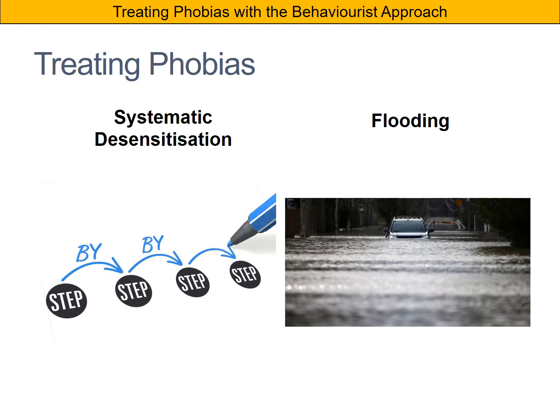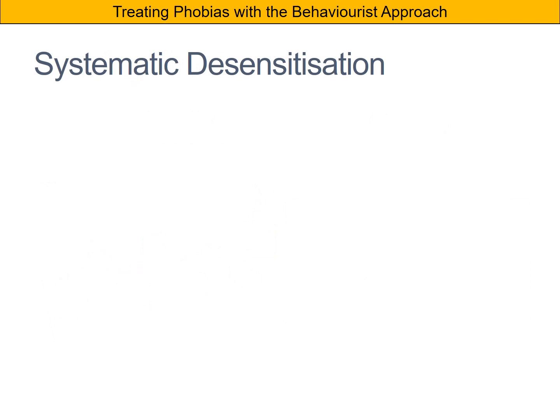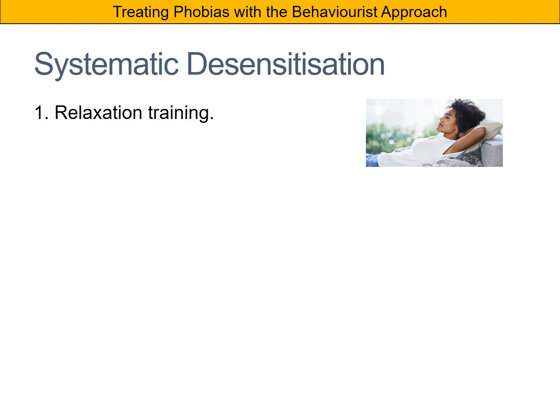You need to know step by step how each of these would be carried out. Systematic desensitisation is quite a slow treatment for a phobia and works on a step-by-step basis. First of all, an individual who wants to be treated for a phobia would be given relaxation training — this could be learning breathing techniques, muscle relaxation techniques, anything that's going to help them stay calm when they're under stress.